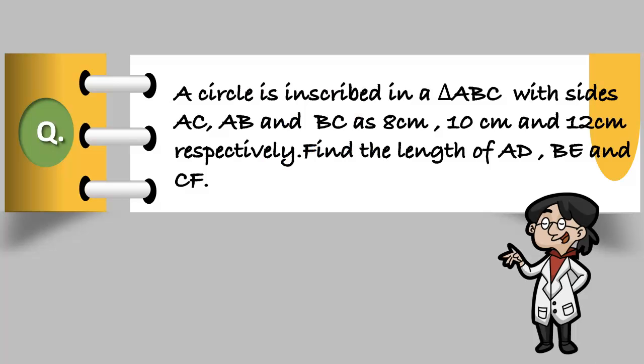Hello friends, let's see this question. A circle is inscribed in a triangle ABC with sides AC, AB, and BC as 8 cm, 10 cm, and 12 cm respectively. Find the length of AD, BE, and CF.